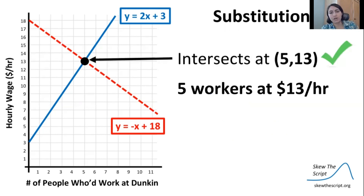All right, so that does verify our estimate for our intersection point — five people working, $13 an hour.